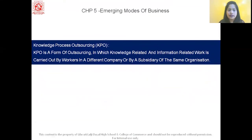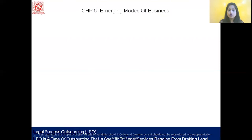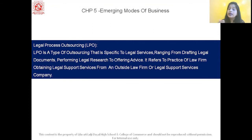The second is KPO, that is Knowledge Process Outsourcing. KPO is a form of outsourcing in which knowledge-related and information-related work is carried out by workers in different companies or by a subsidiary company of the same organization. The third is Legal Process Outsourcing, also known as LPO. LPO is a type of outsourcing specific to legal services, ranging from drafting legal documents and performing legal research to offering advice. It refers to the practice of a law firm obtaining legal support services from an outside law firm or legal support services company.